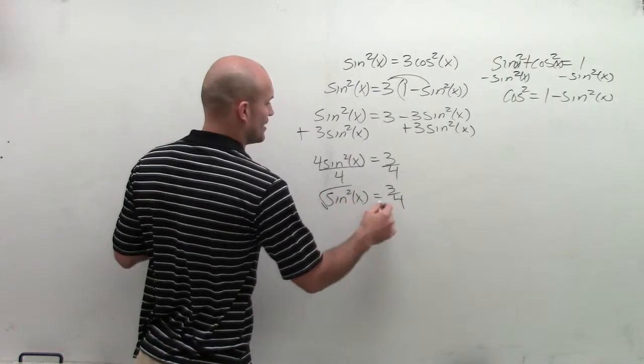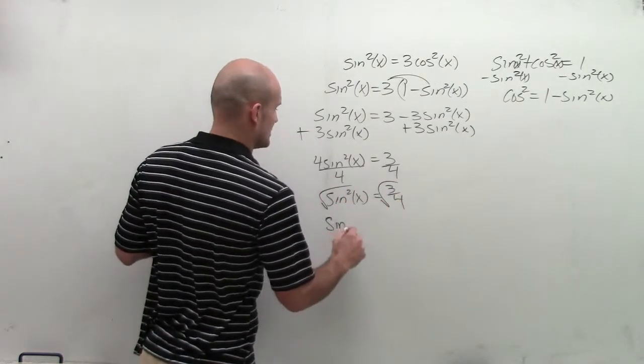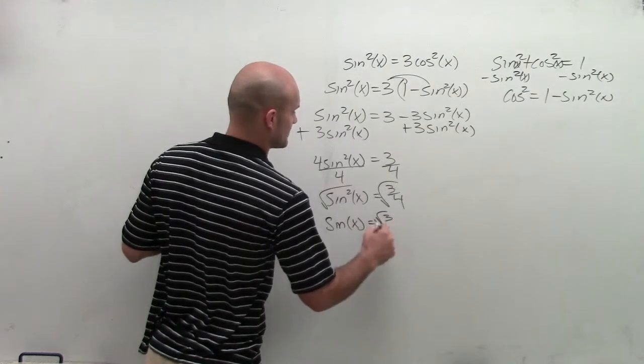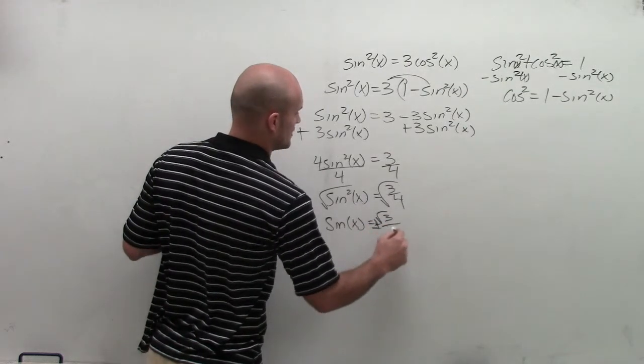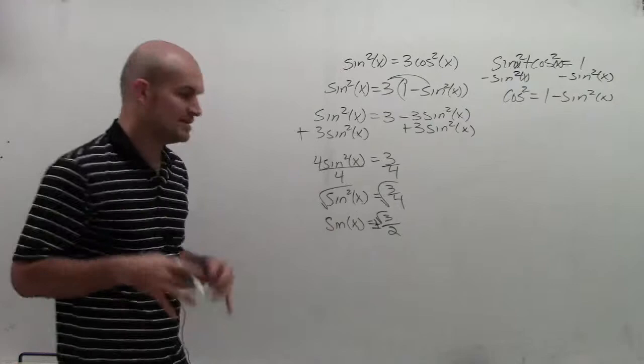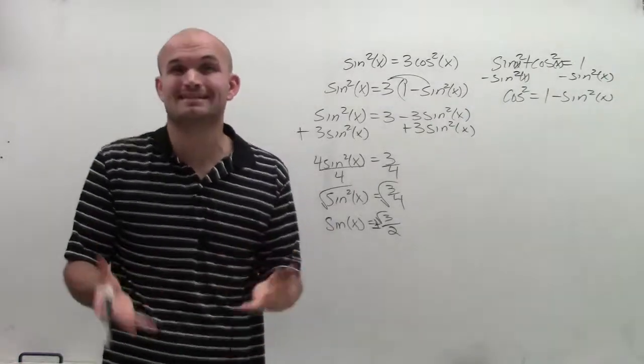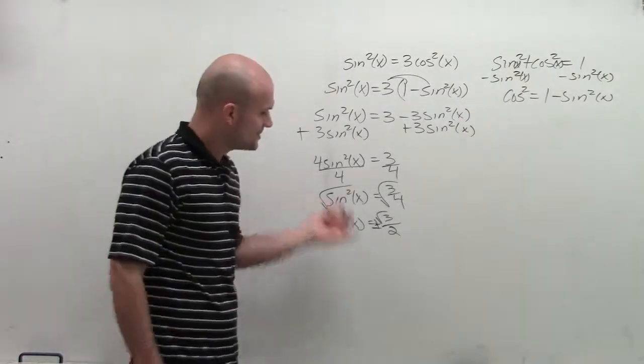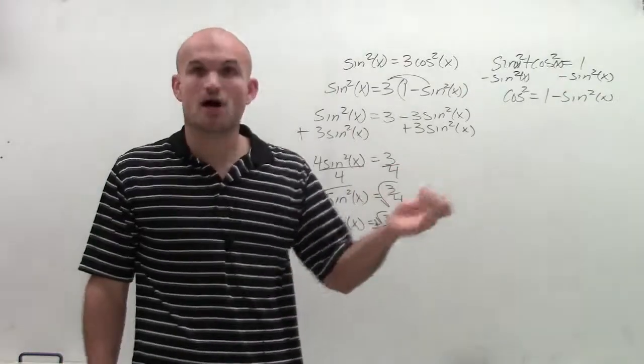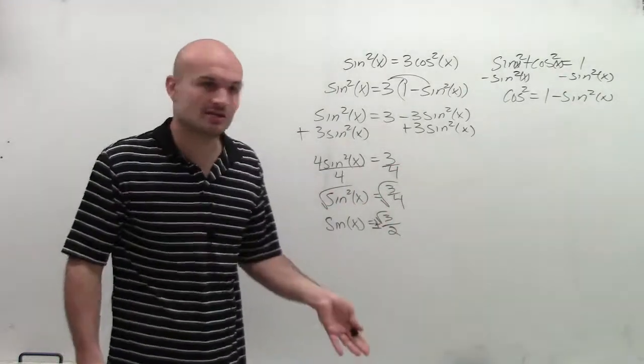Now to undo the squaring, I'm going to take the square root. So I get sine of x equals the square root of 3 plus or minus the square root of 4, which is 2. So you need to make sure when you introduce the square root, we need to take the plus or minus of it.